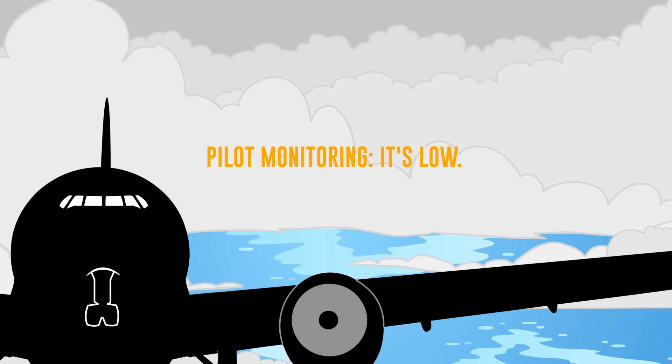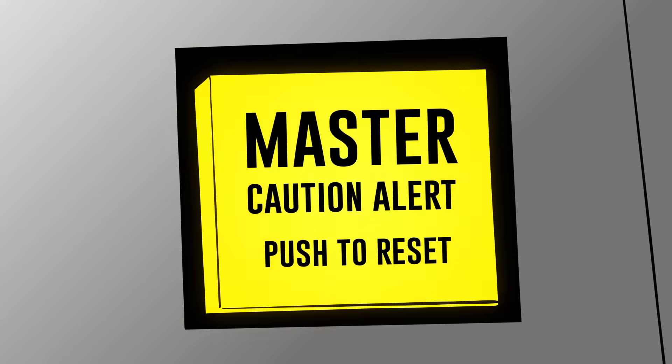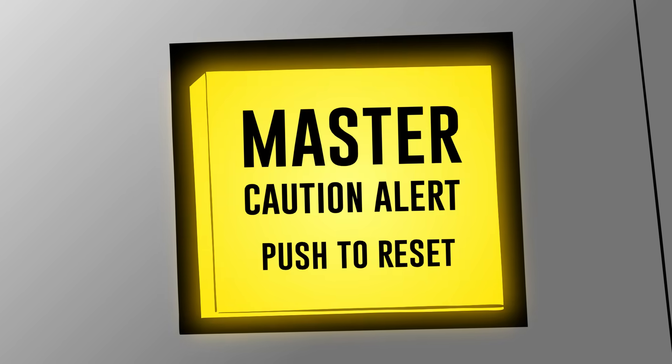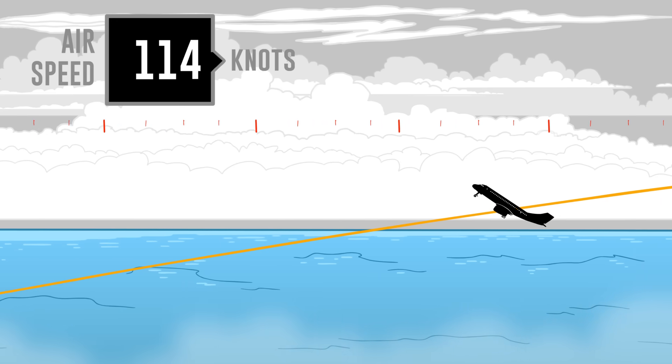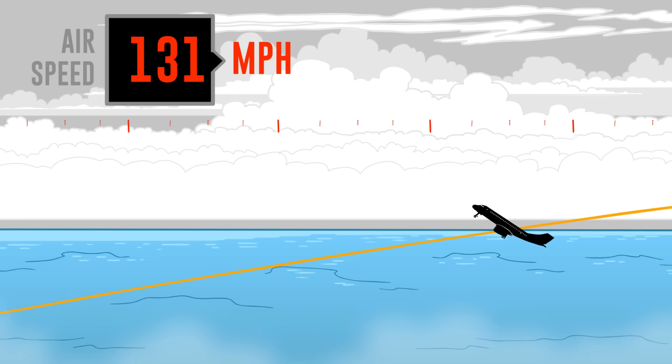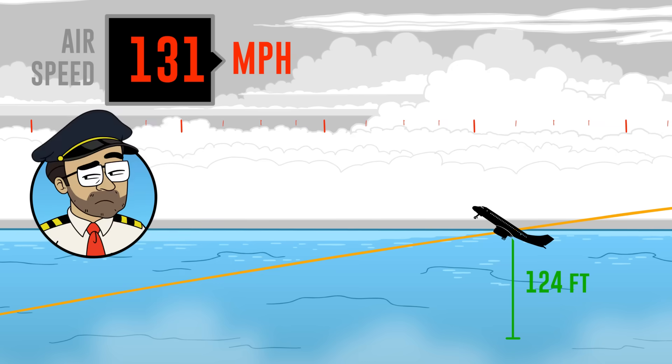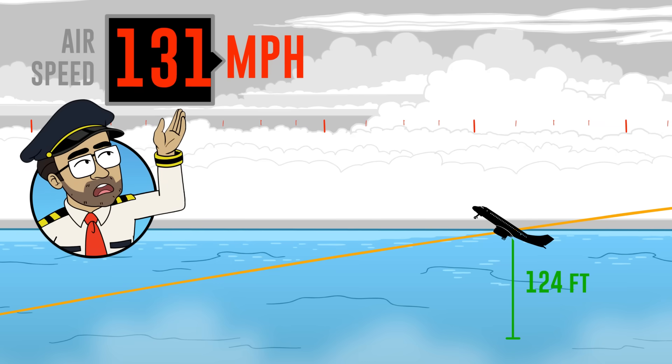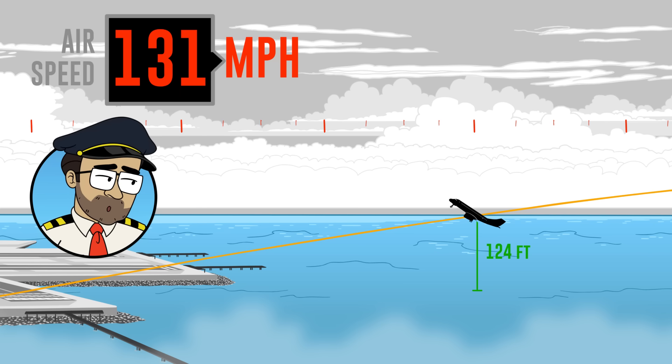The pilot monitoring said, it's low. And the pilot flying replied, yeah. The master caution alert, which is like the big alarm or the general alarm, I guess, sounded less than half a mile out from the airport at an airspeed of 114 knots, which is 131 miles an hour and an altitude of 124 feet. So they're a half a mile out or less than half a mile out, 124 feet in altitude and 131 miles an hour. So they're really close, but they're really low and they're really slow.